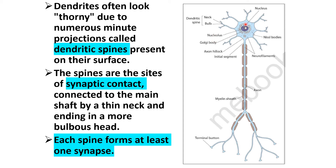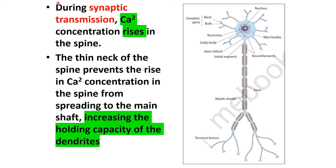The neuron diagram shows centrally placed nucleus and nucleolus, spotted appearance of Nissl granules, Golgi apparatus, dendrites, and thread-like neurofilaments. The long process is the axon, surrounded by a myelin sheath. The initial portion of the axon is the axon hillock, followed by the initial segment. During synaptic transmission, calcium concentration rises in the spine, and the thin neck of the spine prevents this rise from spreading to the main shaft, increasing the holding capacity of the dendrite.